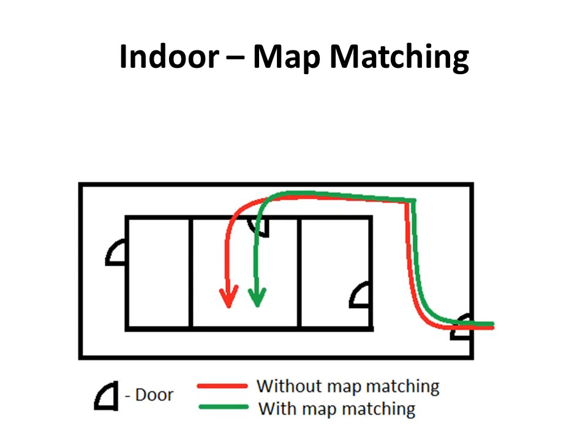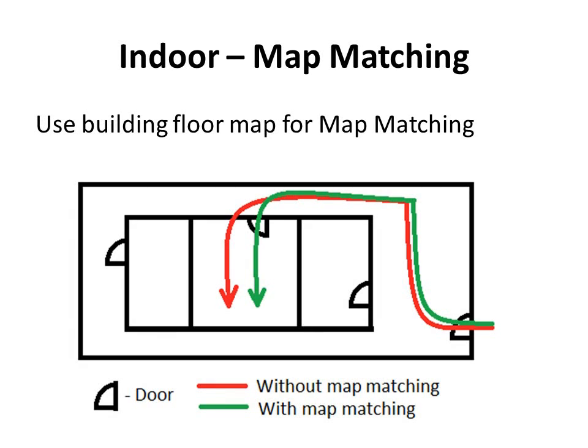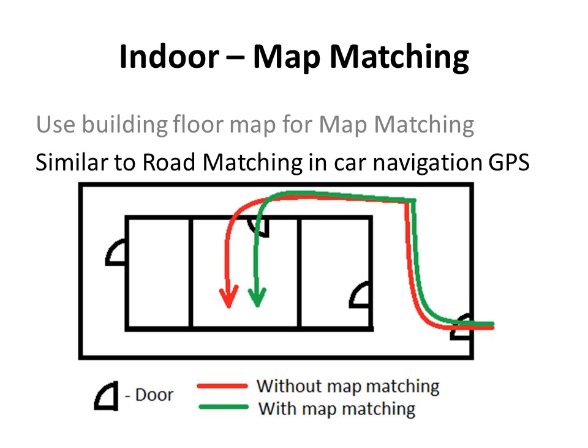Another way of approaching the indoor positioning problem is by the use of indoor building layout maps. These maps show the walls and other impossible constraints in an indoor space. The red line shows the user's position tracked without the knowledge of the building layout — it passes through a wall, which is not true. The green line shows the user's position tracked with the knowledge of the building layout, and this time it passes through the door. This is similar to the road-matching techniques available in car navigation GPS systems.